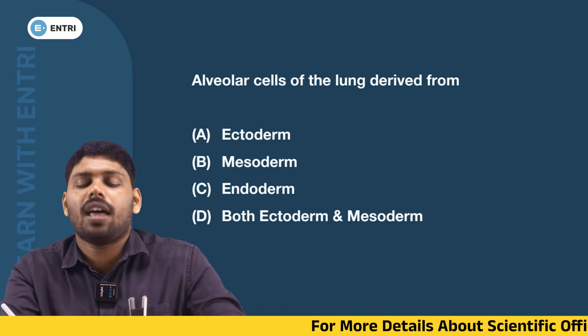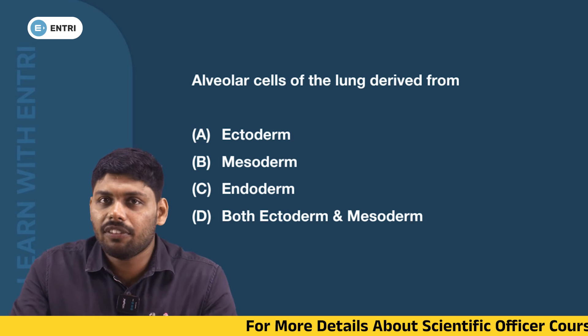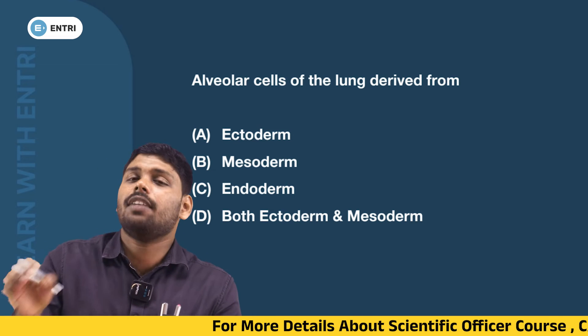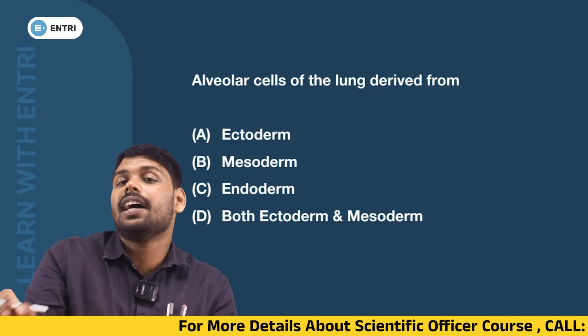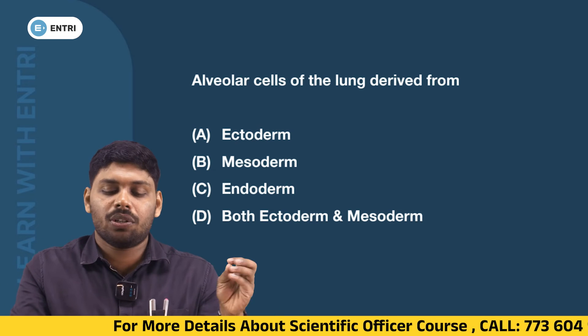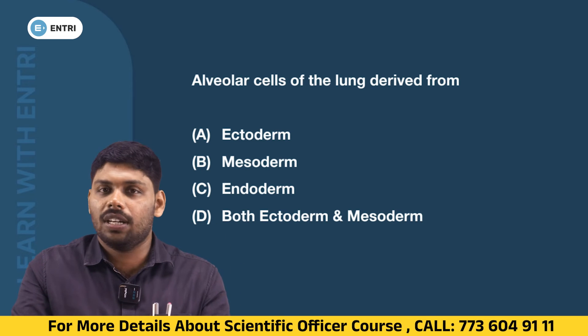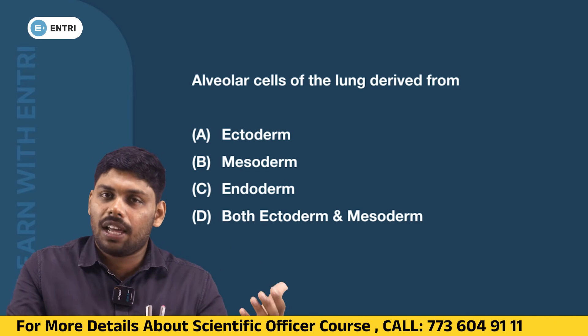Alveolar cells of the lung — what are they derived from? Alveolar cells form a chain from ectoderm, mesoderm, or endoderm? The answer is endoderm.